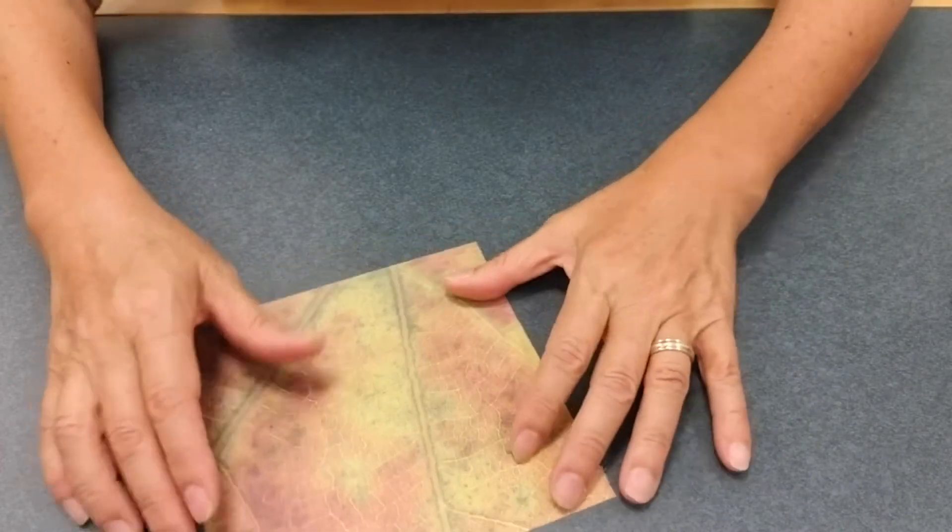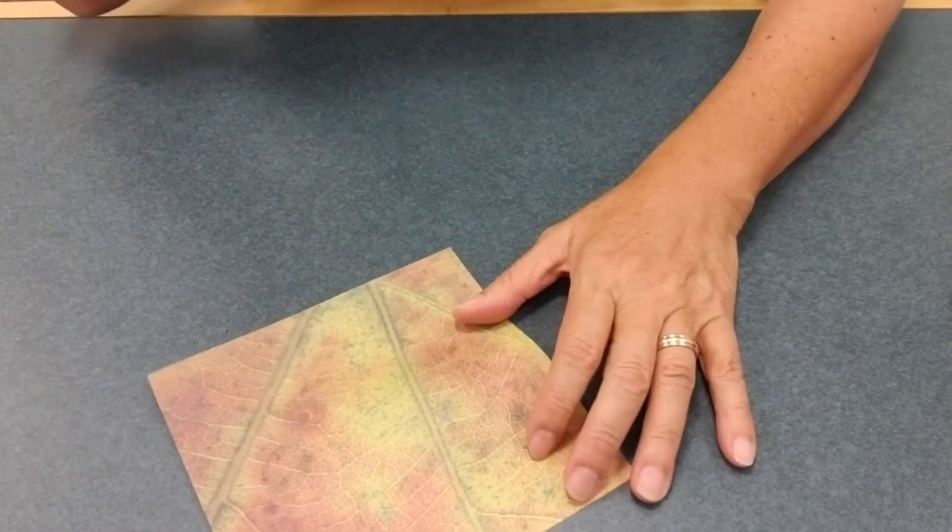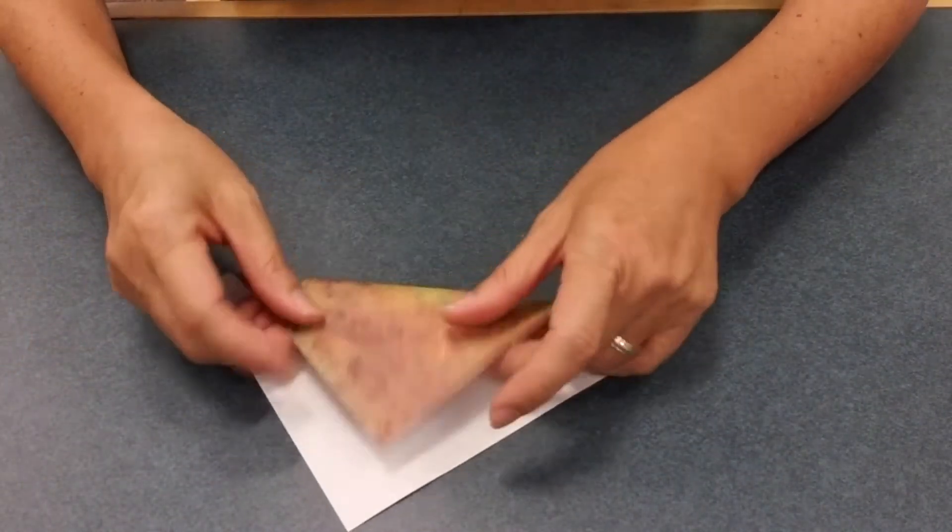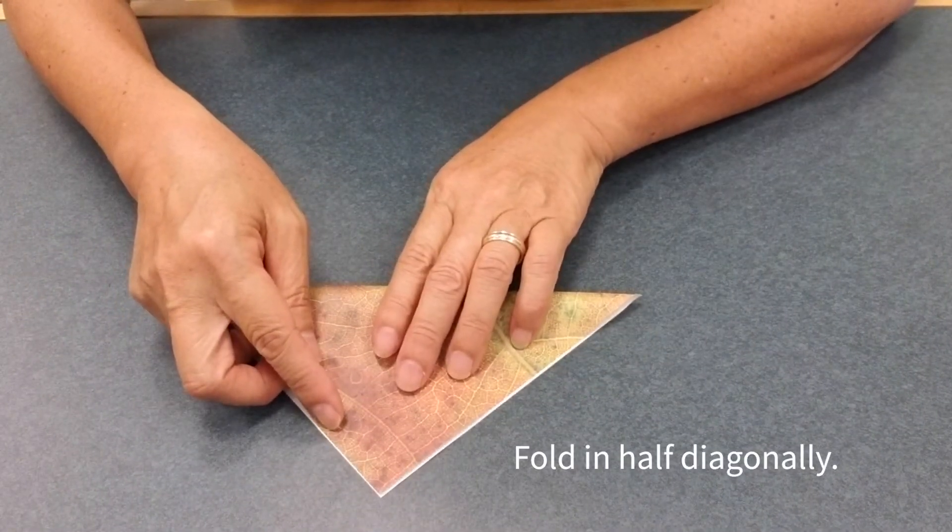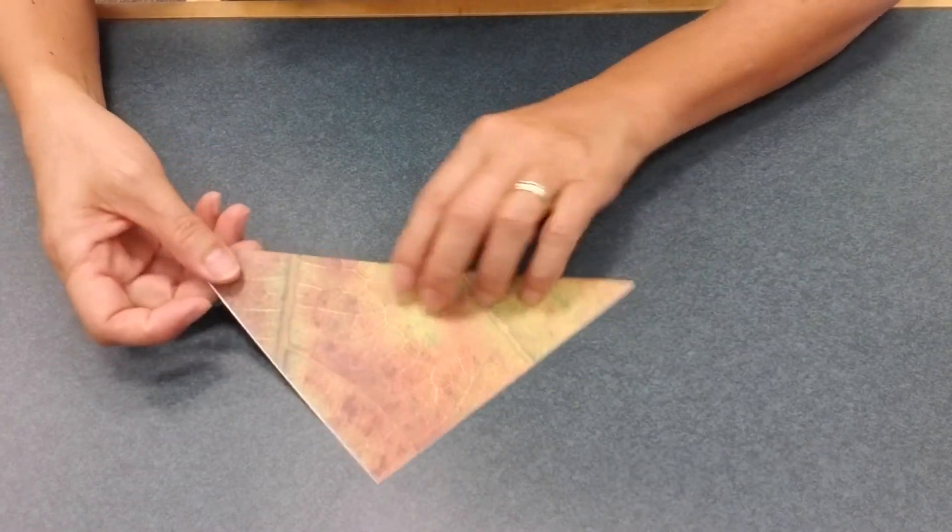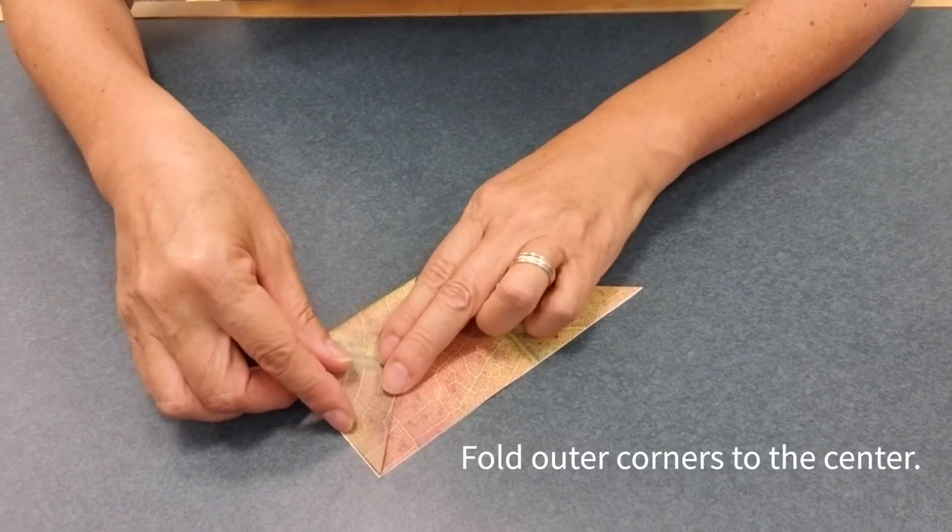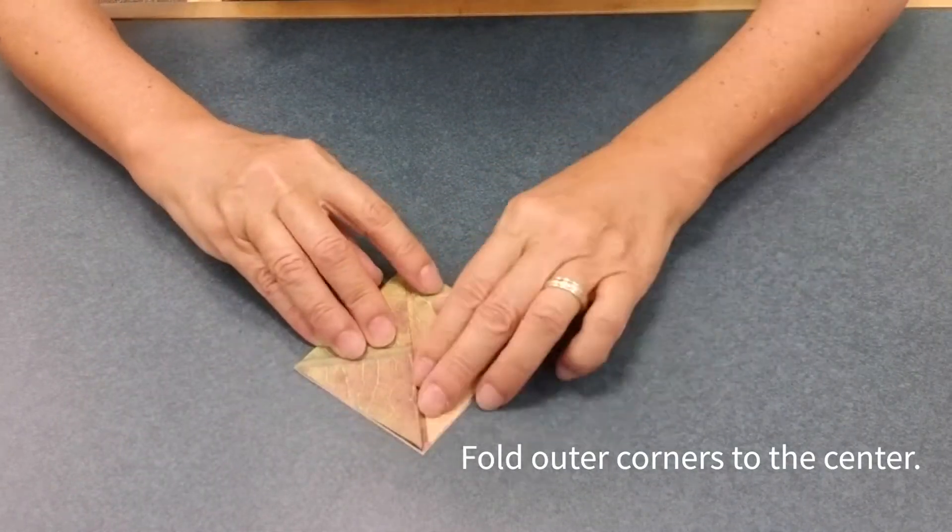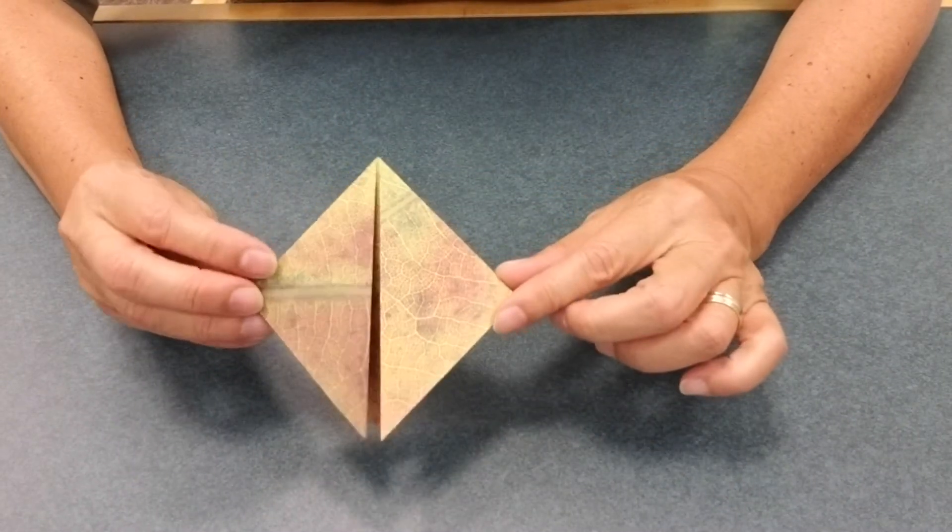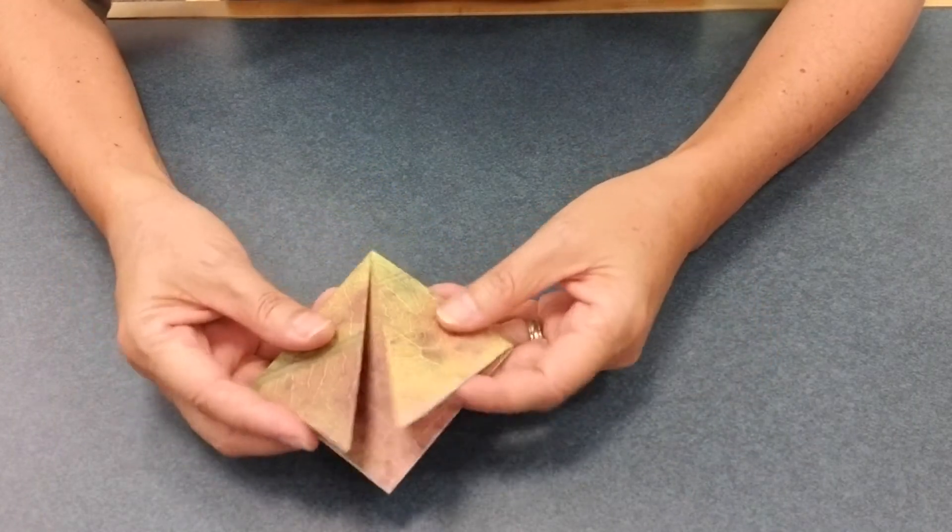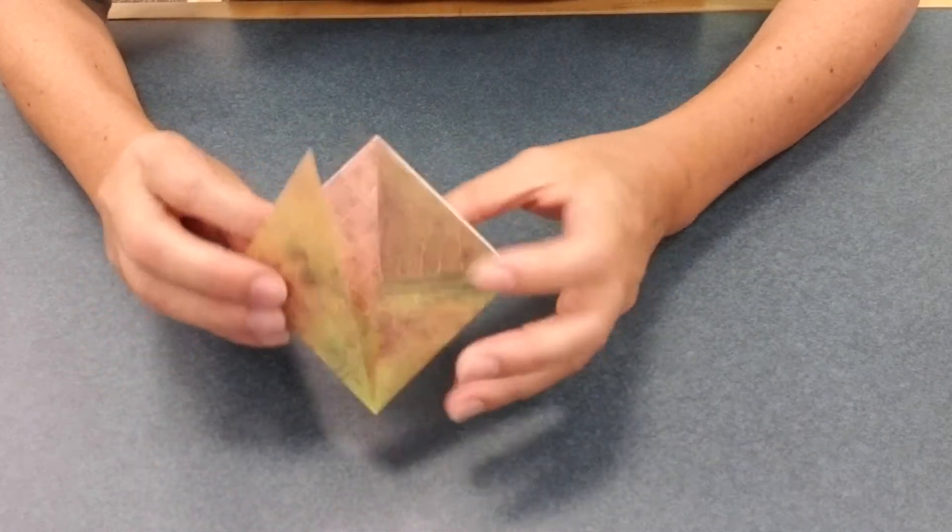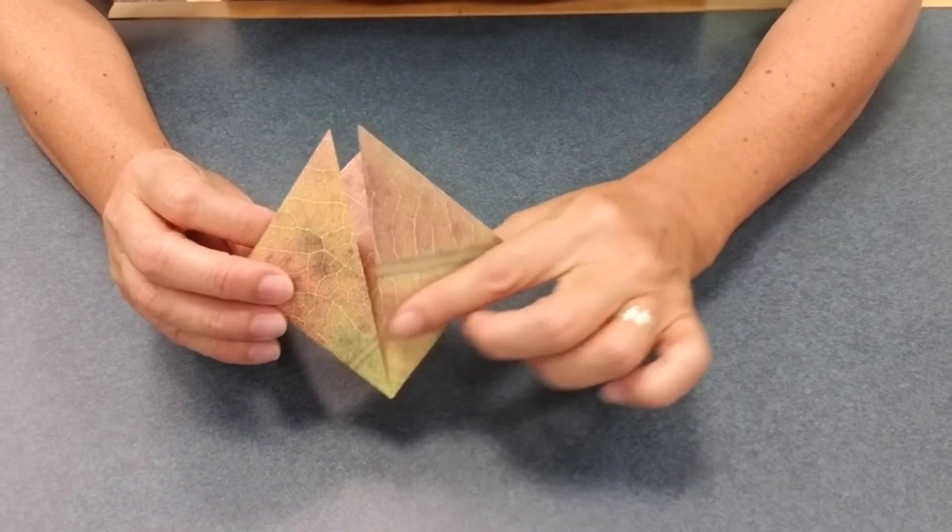Okay, so this is a very easy and fast craft. So you take your paper and fold it in half diagonally. And then bring the outermost corners into the center. All right, so now you have a two inch square. And these flaps will be the wings, and this will be the body.